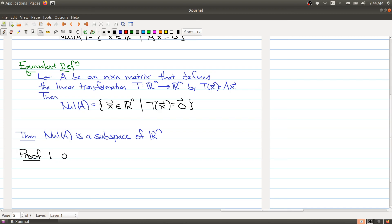Well, first of all, the 0 vector is in the null space of A, since if you take a matrix and multiply it by the 0 vector, you get the 0 vector. That seems pretty clear.